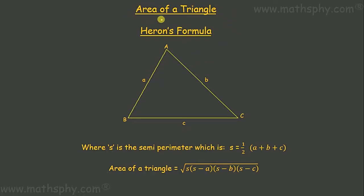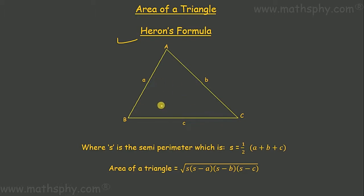There is one more way of finding out the area of a triangle, and we can use the very famous Heron's formula. In the previous video, we saw that we need to know the length of any of the sides and the corresponding altitude. But suppose we know the length of all the sides, however the altitudes we do not know. In that case, we use Heron's formula to calculate the area of a triangle.